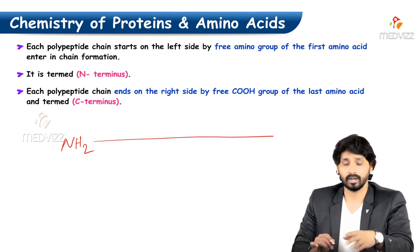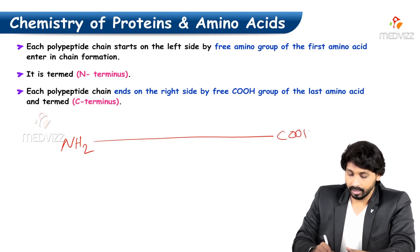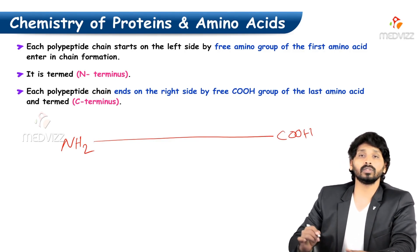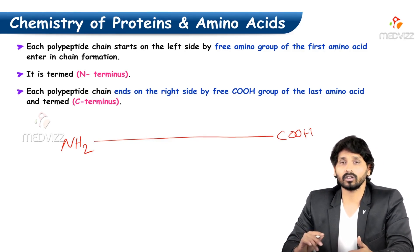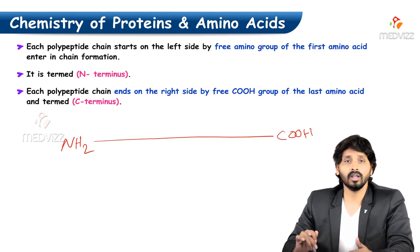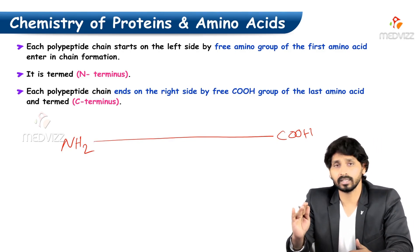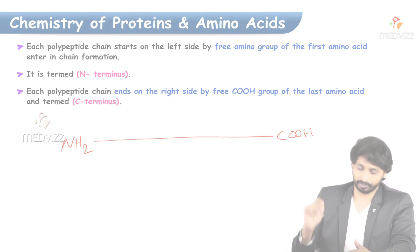Similarly, at the end of the peptide there is the carboxyl terminal, known as the C-terminus or carboxy terminal, where the last amino acid's carboxyl group is free.